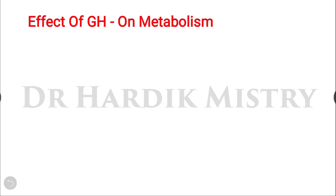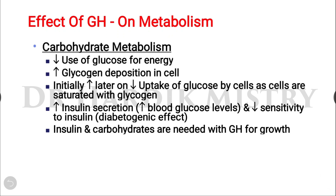The effect of growth hormone on carbohydrate metabolism: it decreases the use of glucose for energy and increases glycogen deposition in the cell. Initially there is an increase, but later there will be a decrease in the uptake of glucose by cells as cells become saturated with glycogen. Once cells are saturated, there will be a decrease in glucose uptake, and as blood glucose level increases, there will also be an increase in insulin secretion — that is the indirect effect.